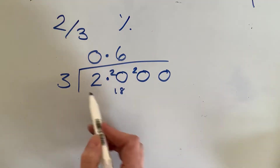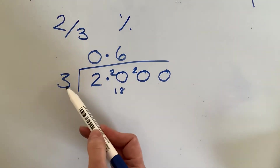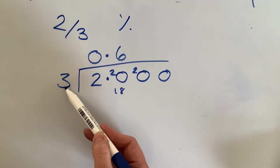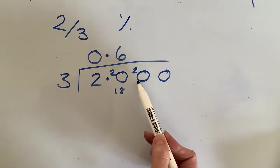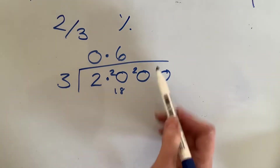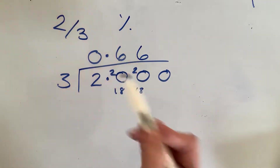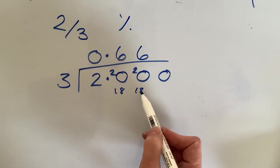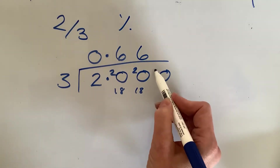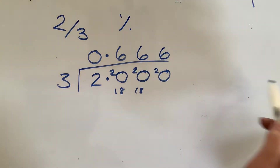I've got 20 again. I'm just going to see if this carries on and on and on, because I suspect it will. So 3s into 20 is 6, because 6 threes are 18. Same as before — 20 take away my 18 is 2. So as we can see, this is going to keep going on off the page.